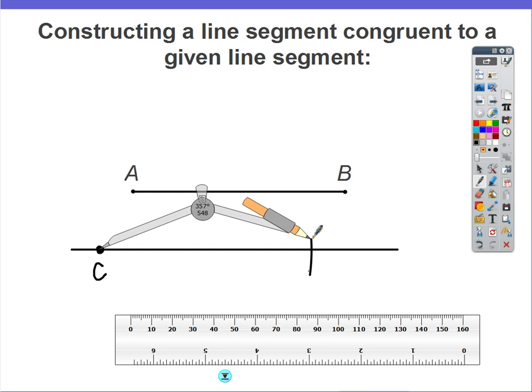At the intersection where that arc meets the new line segment, we're going to mark that point D. And now we've finished our construction because we can say through geometric construction that segment AB is congruent to segment CD.